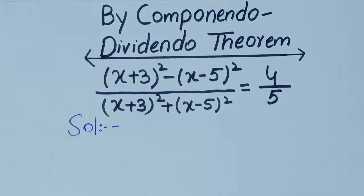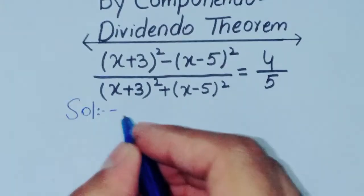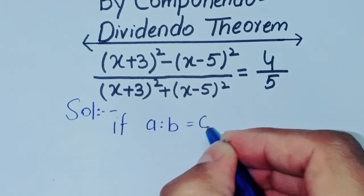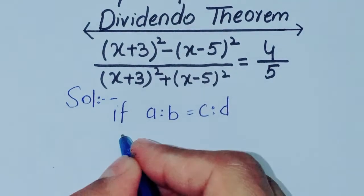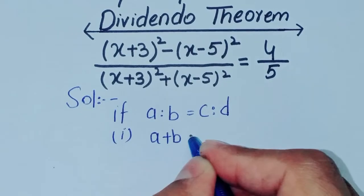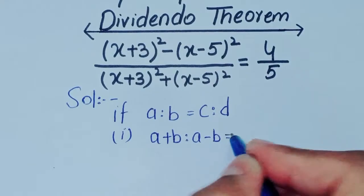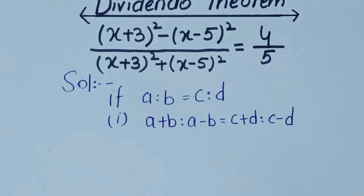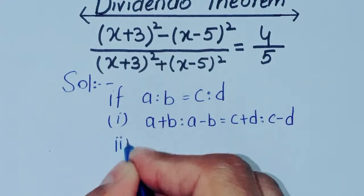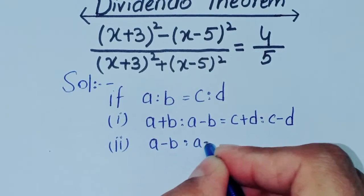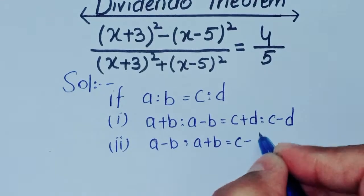First of all, we have to know what the componendo-dividendo theorem is. By this theorem, if a ratio b is equal to c ratio d, then: first, a plus b ratio a minus b is equal to c plus d ratio c minus d.